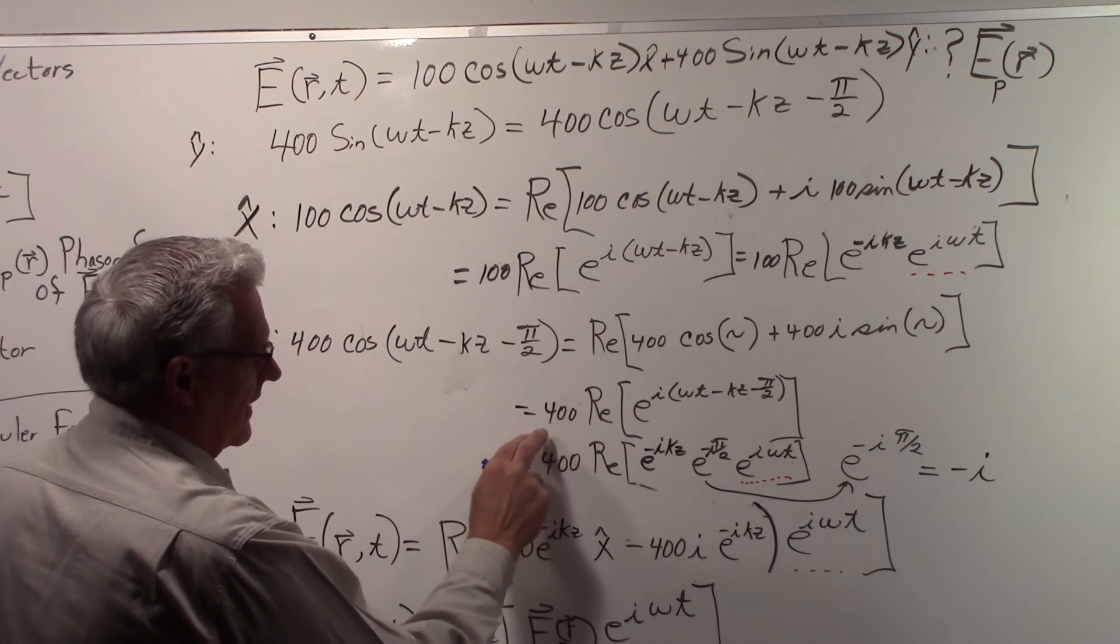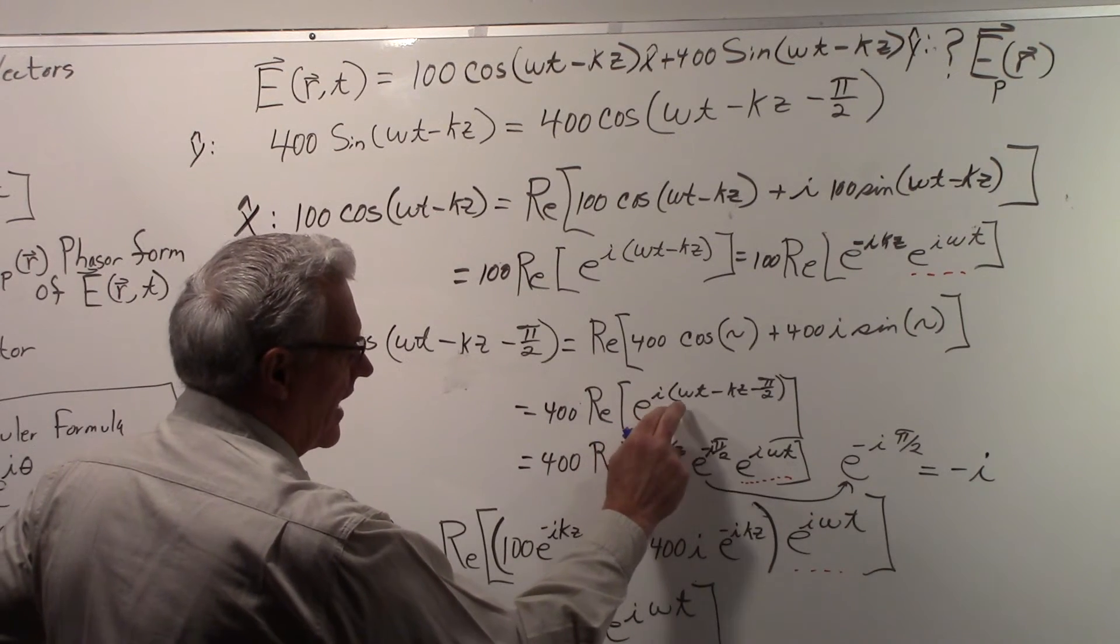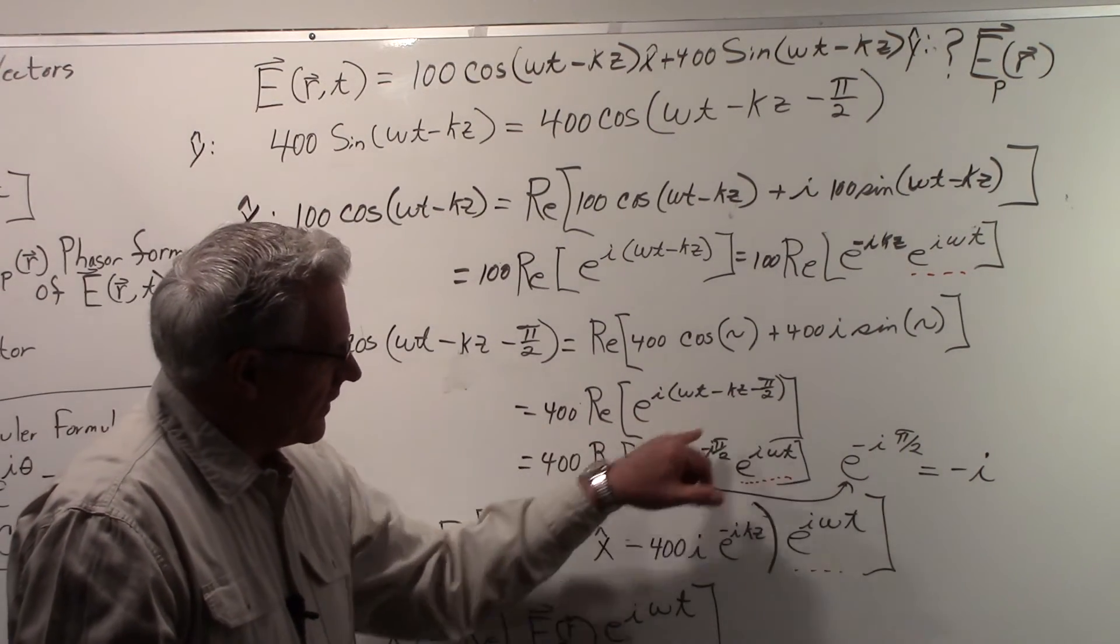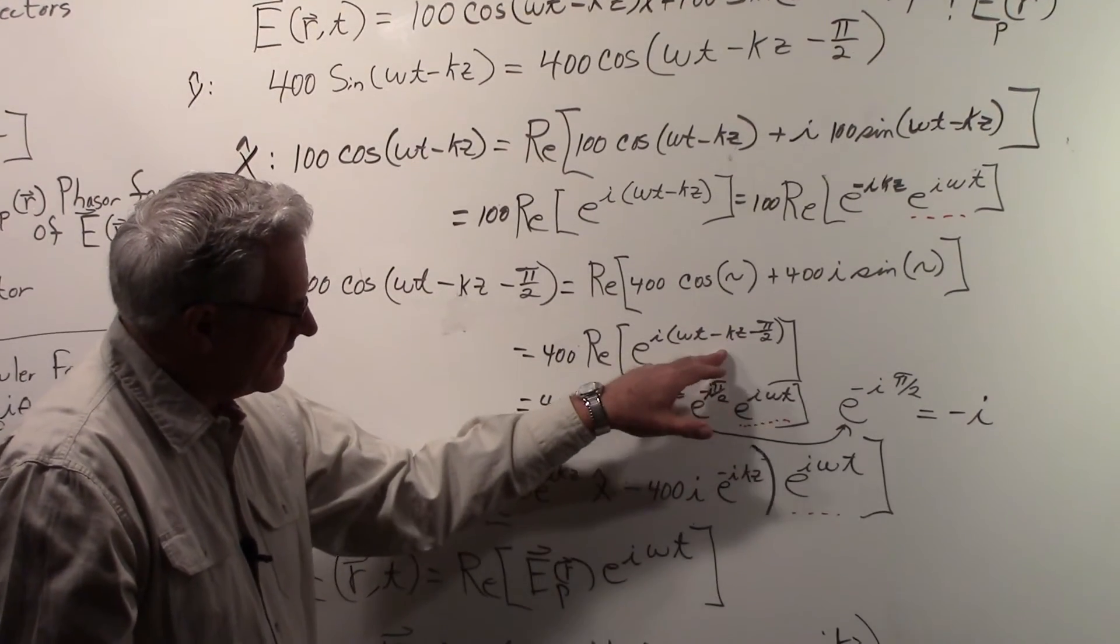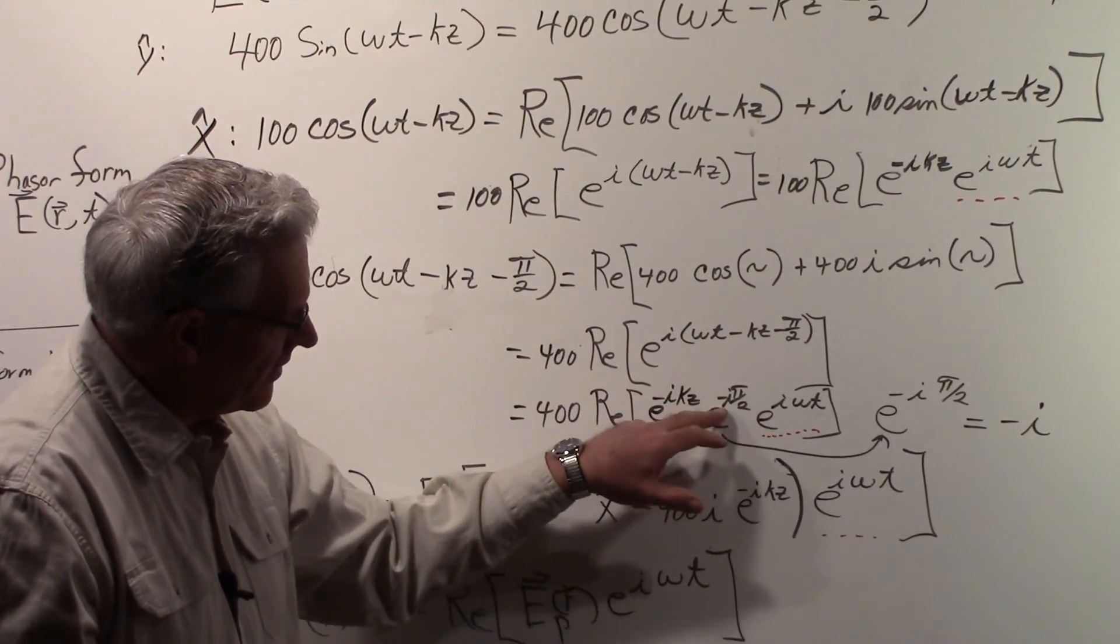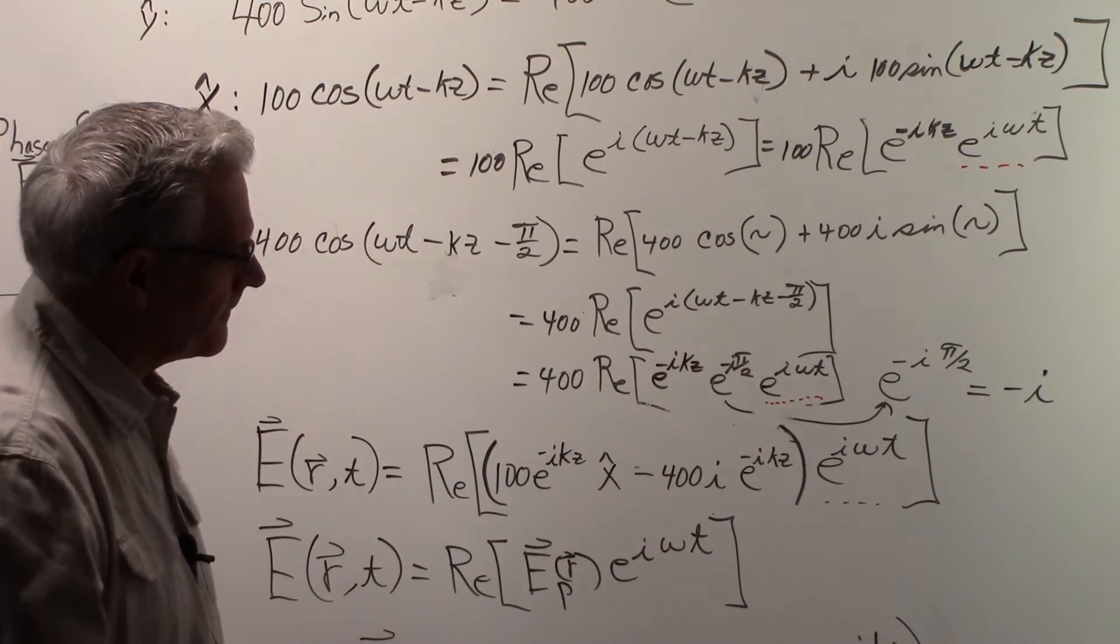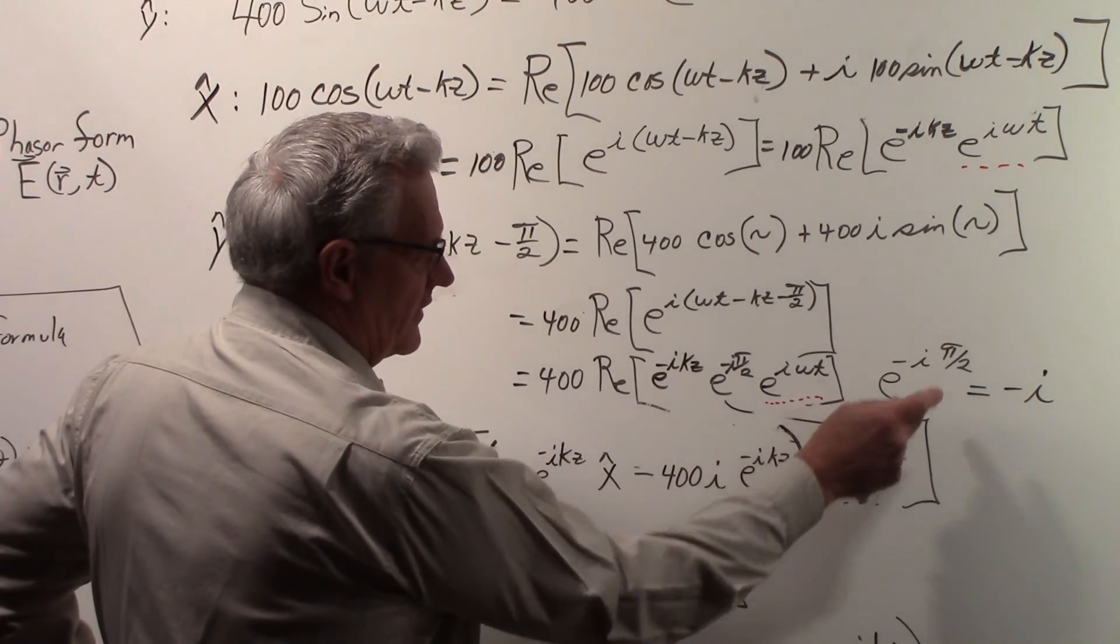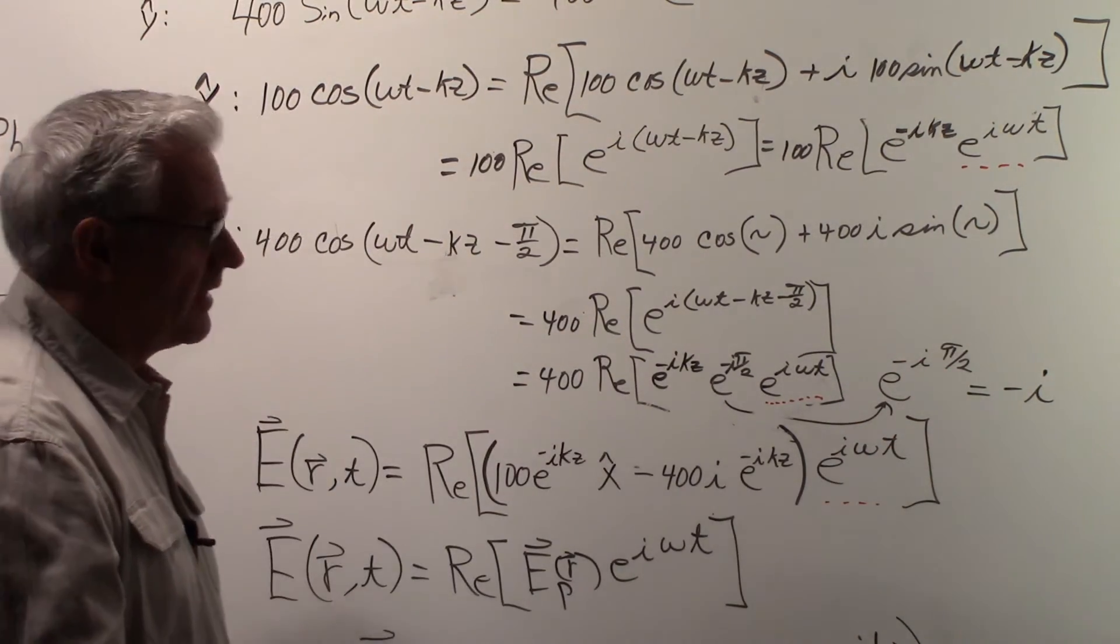Now, we can reorganize things here by using the Euler formula. So using the Euler formula, we would have e to the i omega t minus kz minus pi over 2. We can work this out into these factors. And I rearranged it a little bit. So here's the e to the minus ikz. Here's the e to the minus pi over 2. And then the e to the i omega t. And again, this is something that we want to get. Now, if we look at the e to the minus pi over 2, we can use Euler's formula again. And if we substitute in, we will find out that e to the minus i pi over 2 is going to give us a minus i.